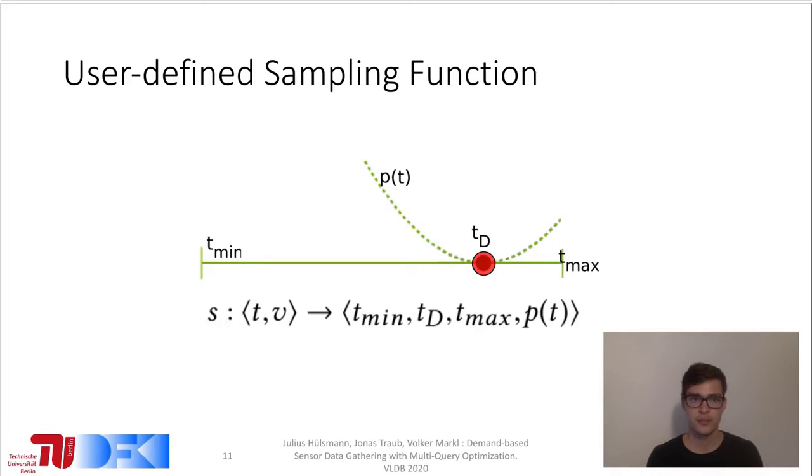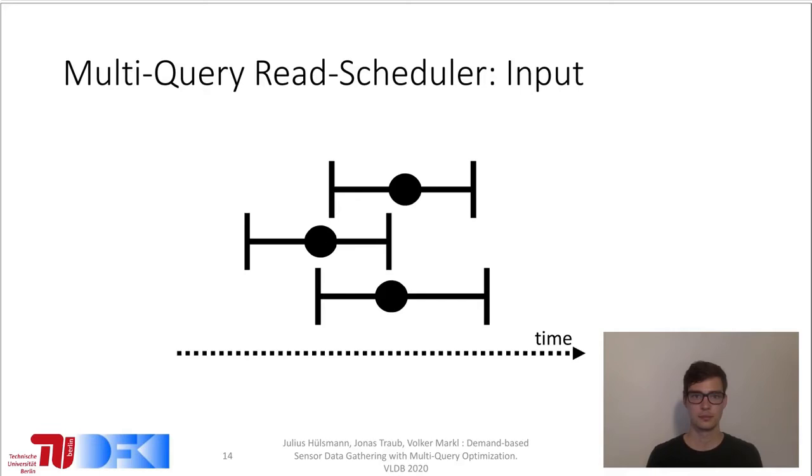Firstly, the desired read time, which can for instance be proposed by an adaptive sampling technique. Secondly, an interval around the desired read time. And thirdly, a penalty function defined on that interval, which specifies how bad it is to deviate from the desired read time.